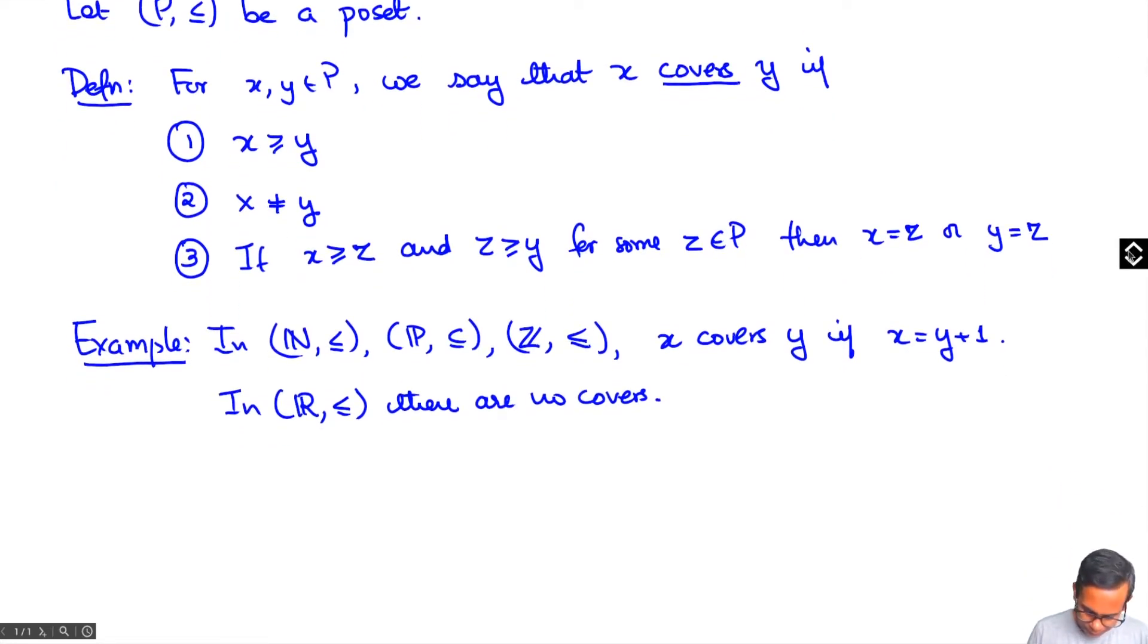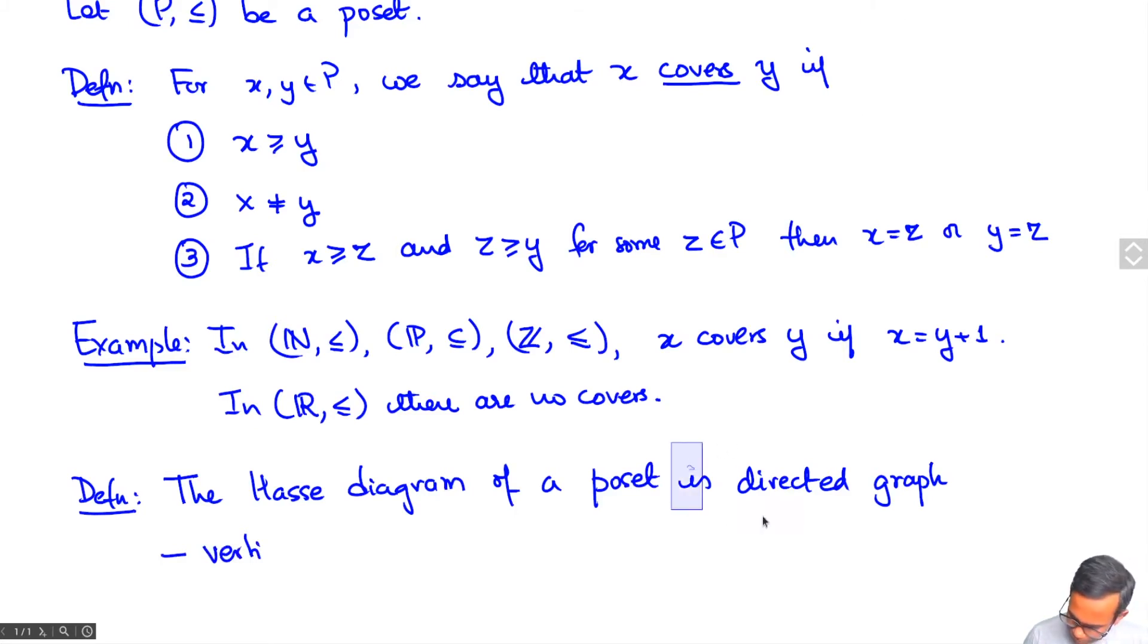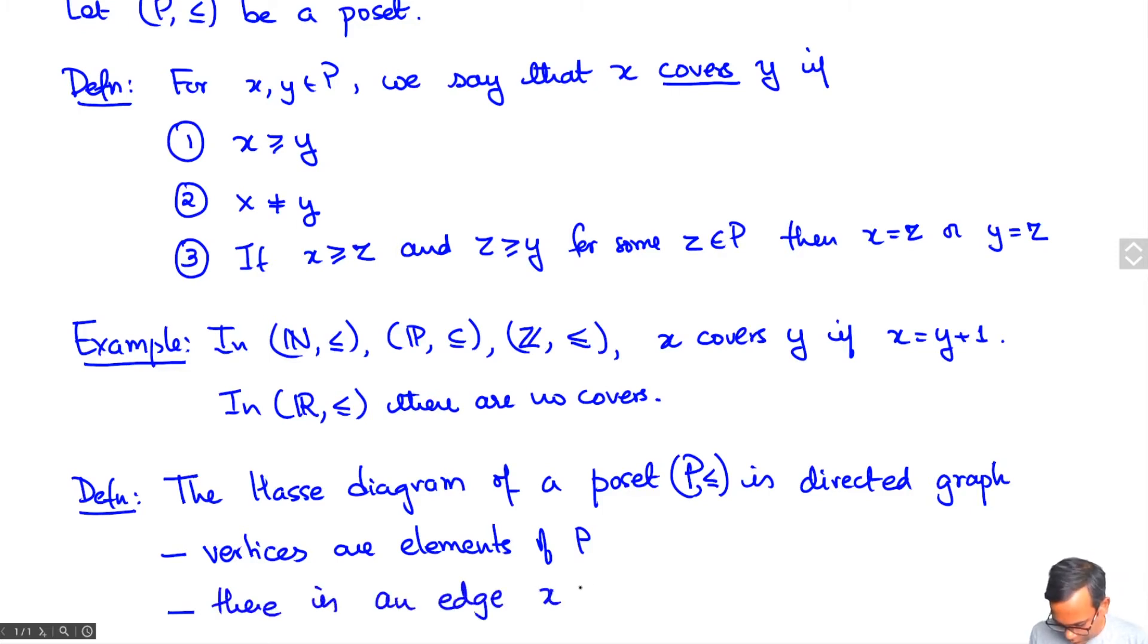Now the Hasse diagram of a poset, and this is going to be the visualization that I'm heading towards, is a directed graph whose vertices are elements of P and there is a directed edge if x covers y. That's the Hasse diagram.